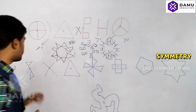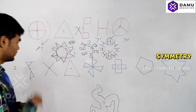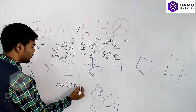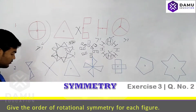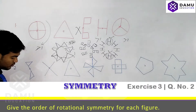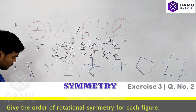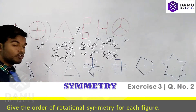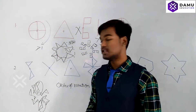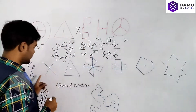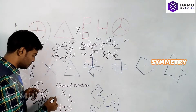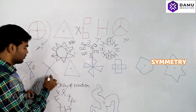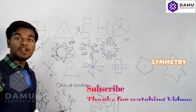For the second question, we find the order of rotation for all the given figures. For the first figure, when you rotate it you can see it here once and here once — two times total. So the order of rotation is two. For the second figure with four lines, you can see it four times, so the order of rotation is four.